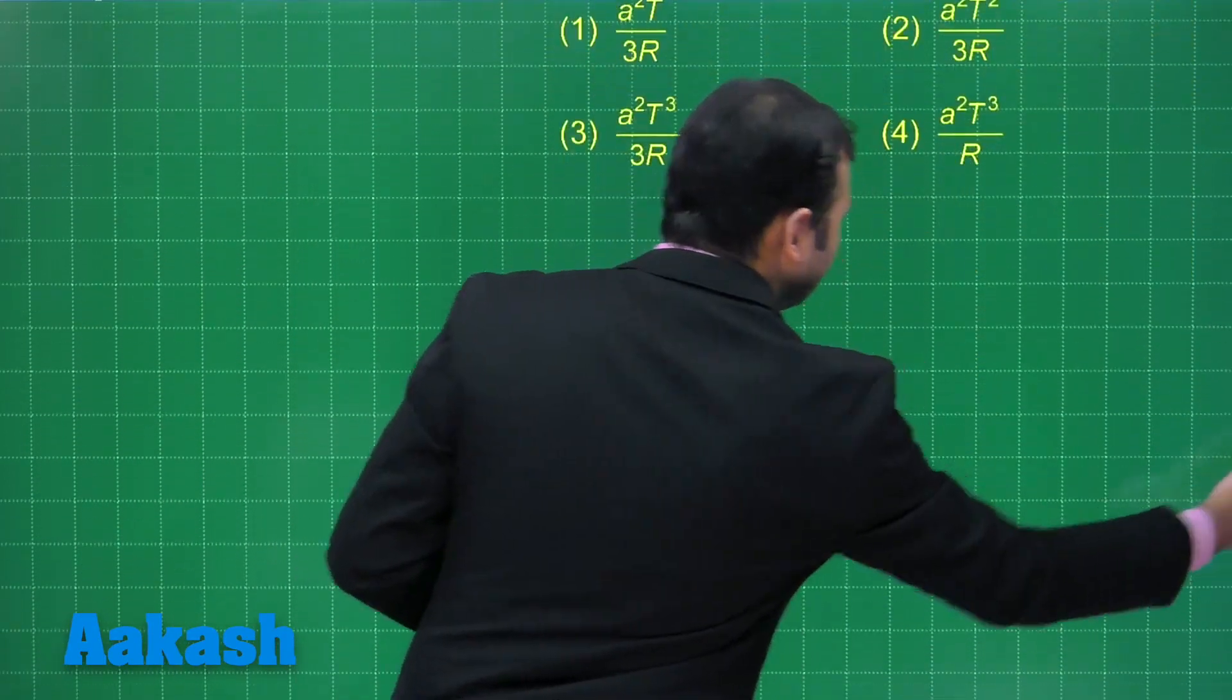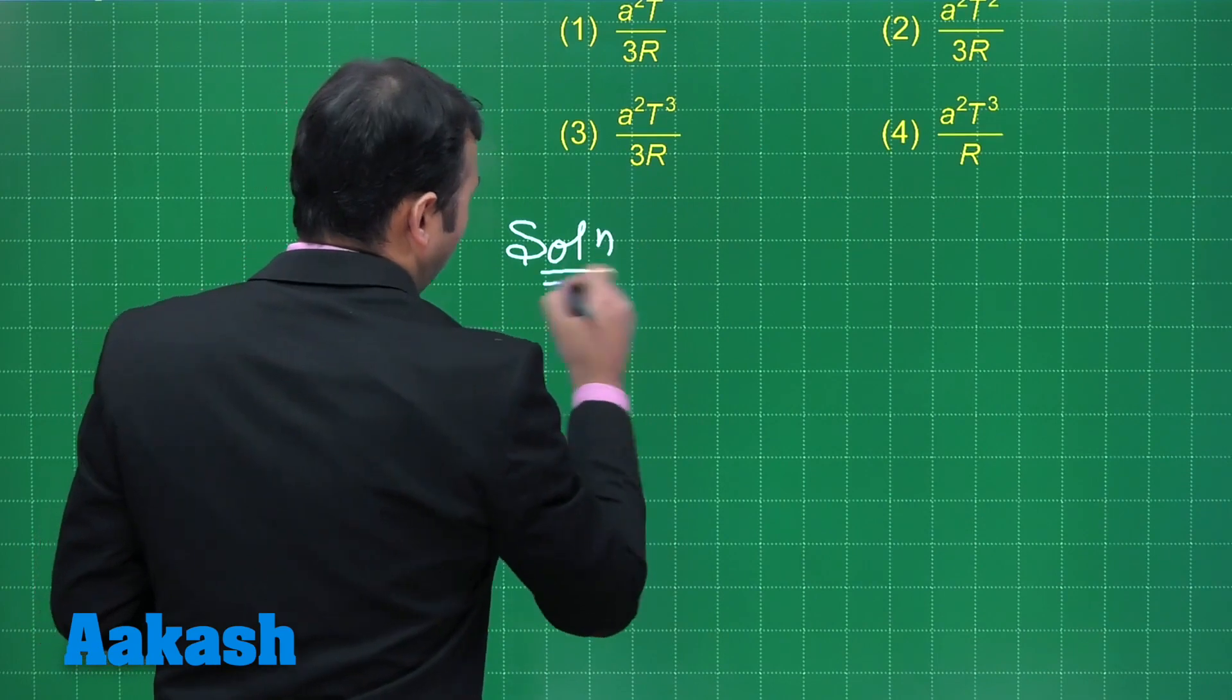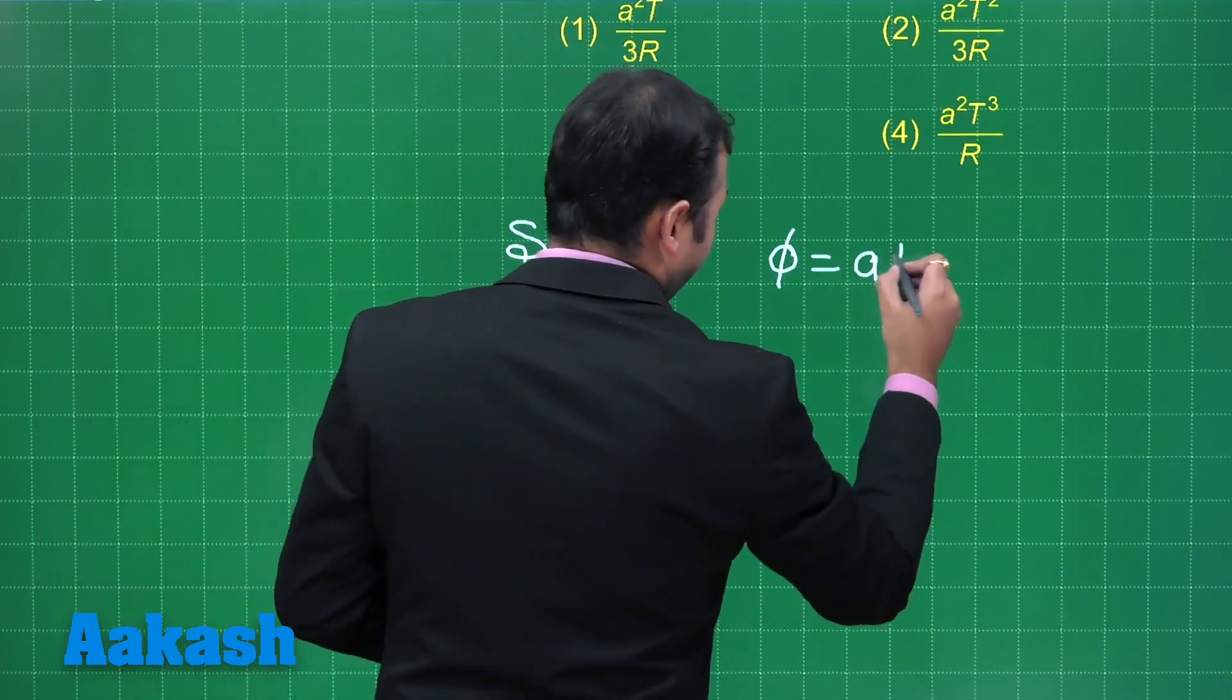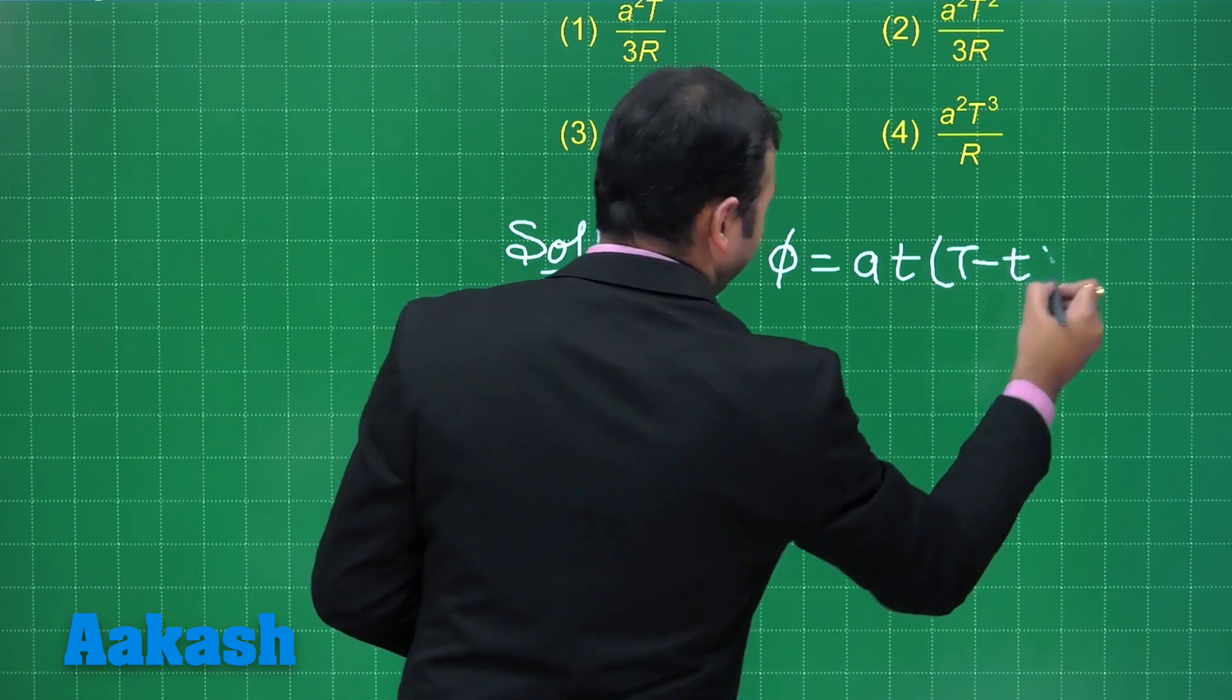So, let us start with the solution. Now, we are very well aware that phi is given as A T capital T minus small t, right?